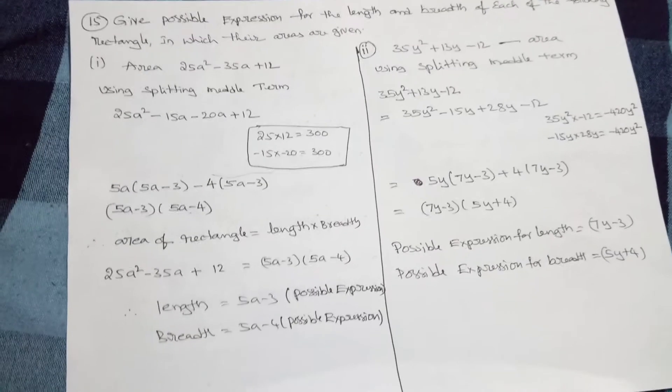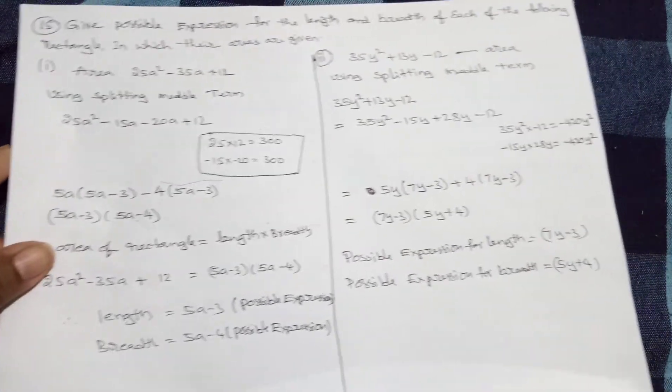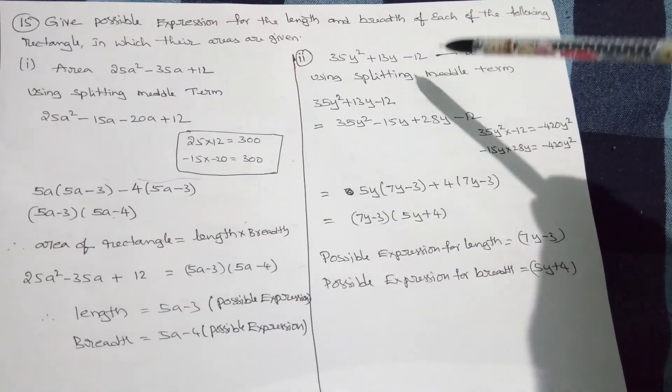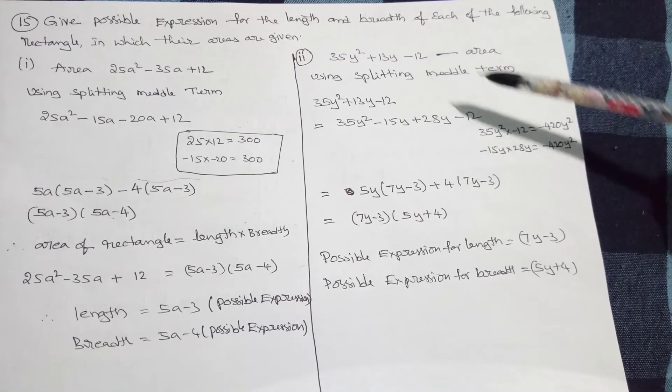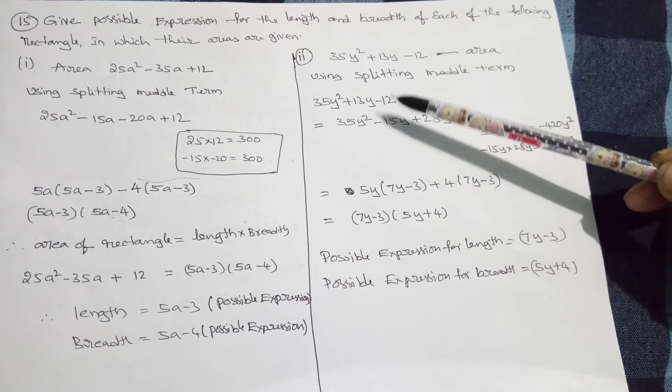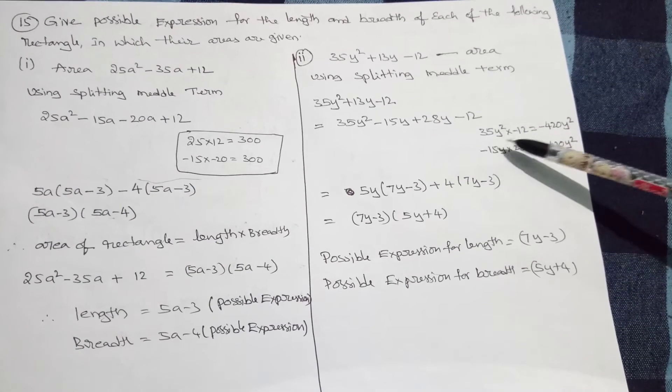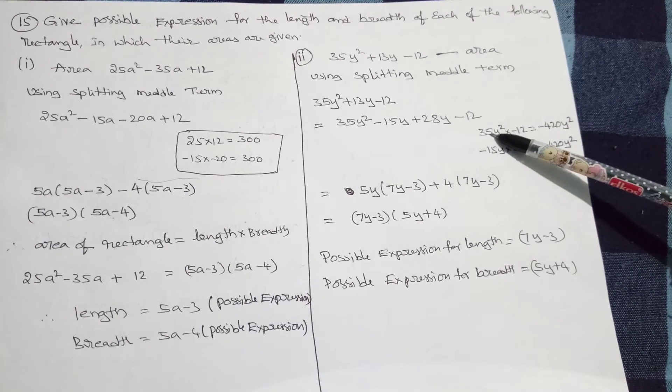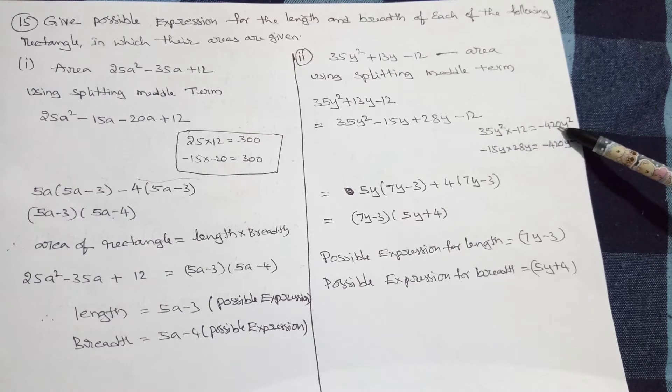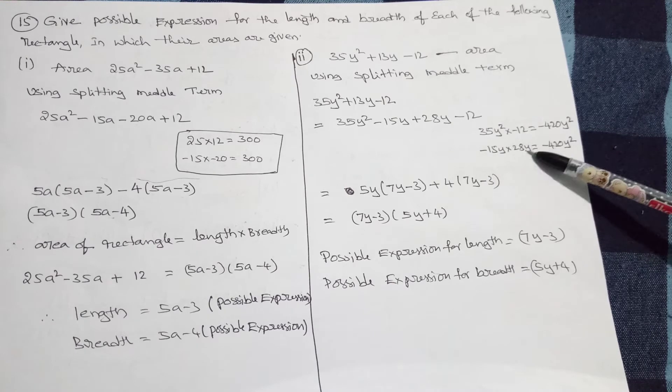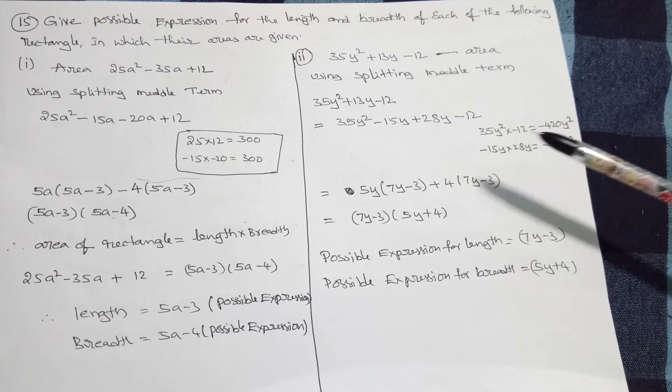In the same way, another expression given: 35y² + 13y - 12. That is area. Now, split the middle term. I have given you the rough work: 35, 12s minus 420. 15, 28s also minus 420.